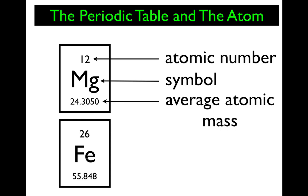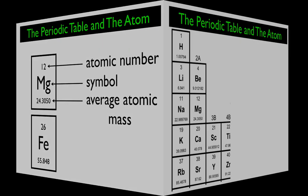Here's another one — Fe. Fe stands for iron, from the word ferrous. This is the periodic table block for iron. Fe is the symbol for iron. Every atom of iron has 26 protons. If it has 26 protons, then it's iron. And this is the average atomic mass, which we will talk about in a future video.